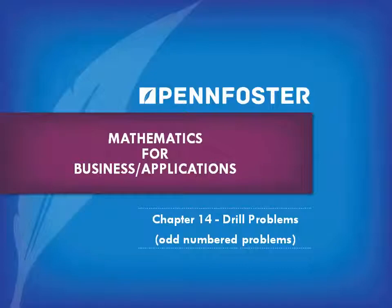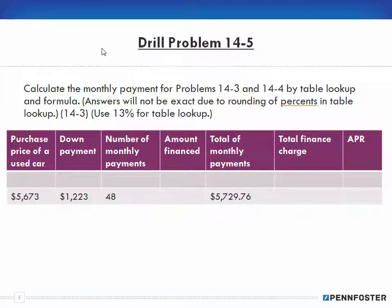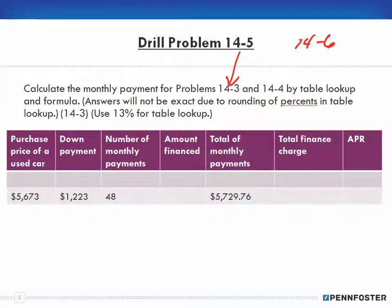Welcome back to Math for Business Applications, Math for Business and Finance, and Math Applications. This is the Chapter 14 drill problems — the odd-numbered problems — and we are picking up where we left off with problem 14-5. The text says to calculate the monthly payment for problems 14-3 and 14-4 by table lookup and formula. Drill problem 14-5 refers to 14-3, and since we're not doing even-numbered questions, I've reproduced the work of the table for 14-3.